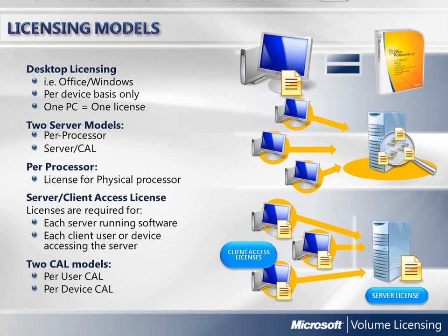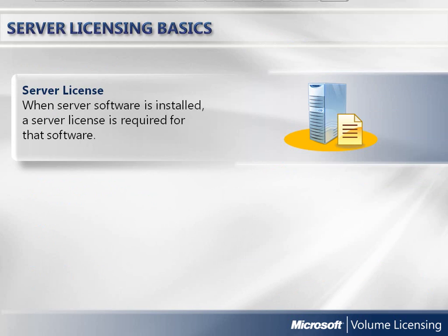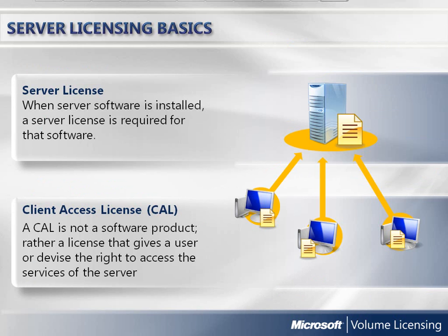There are two CAL modes: per user or per device. For the server CAL model, every installed copy of the server software requires a server license. A client access license is required in order to access or use the server software. A CAL is not required if access to the server software is via the internet or is unauthenticated — for example, accessing a website for general information where no identifying credentials are exchanged.